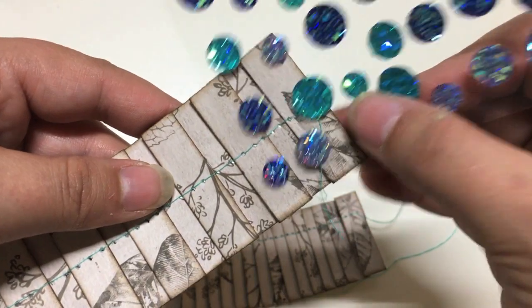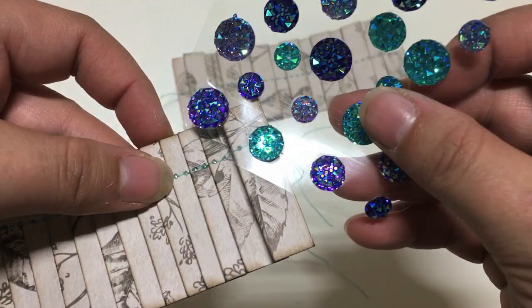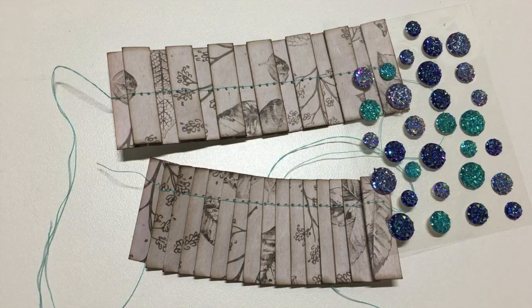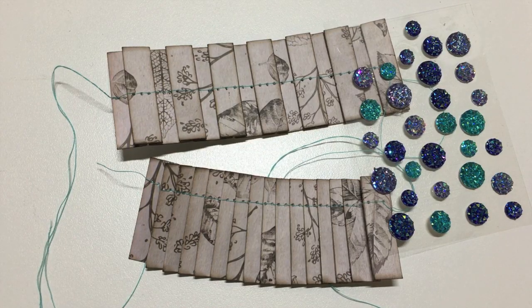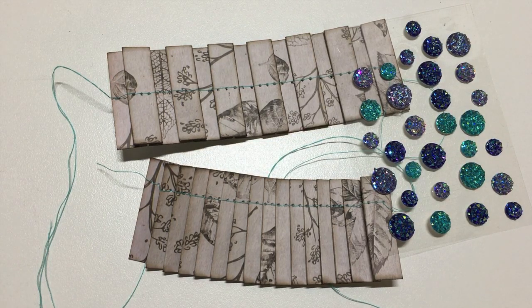Don't worry about the very end where you think the thread might be coming loose. You can always cover that with a pretty jewel or enamel dot. And then also put some tape or glue right along the back of the stitching to glue it down to your project and that will hold everything in place.